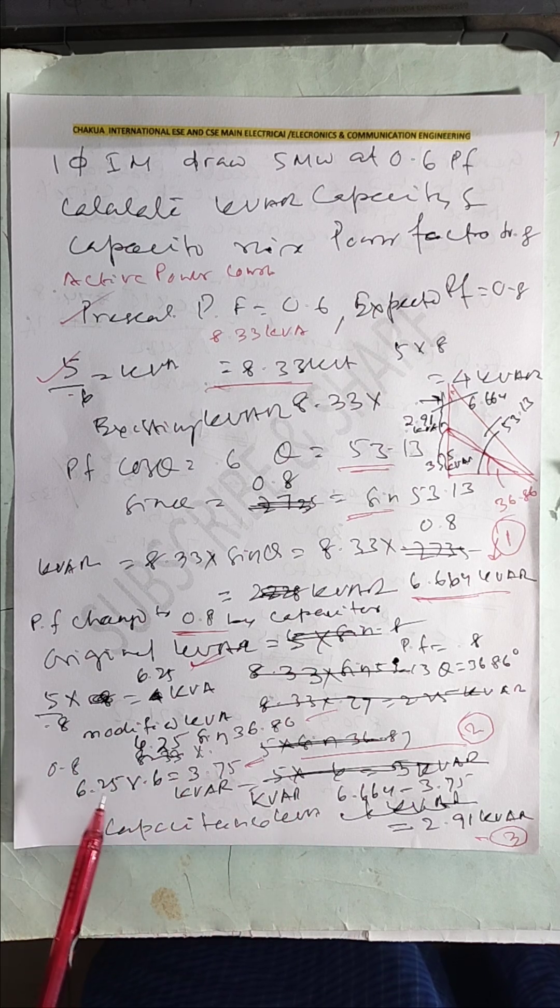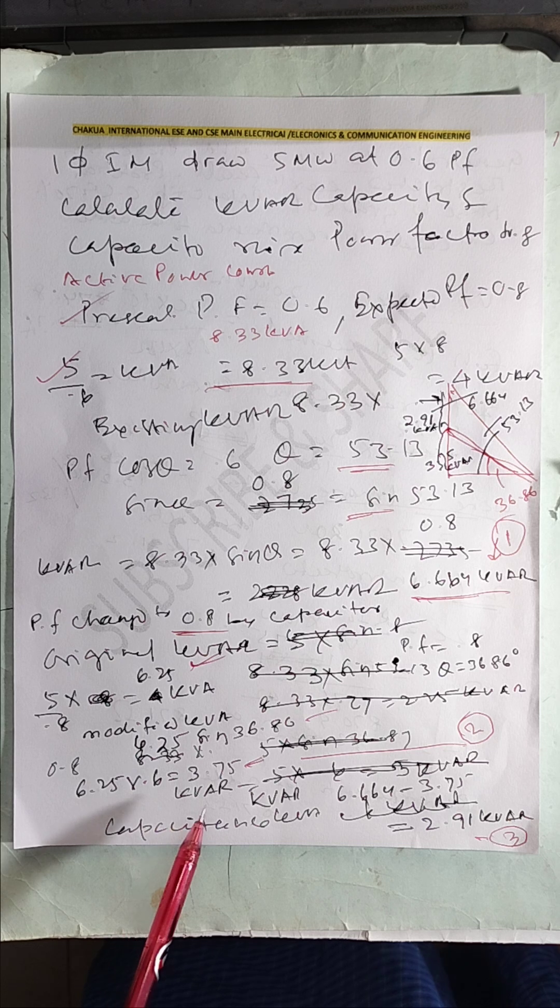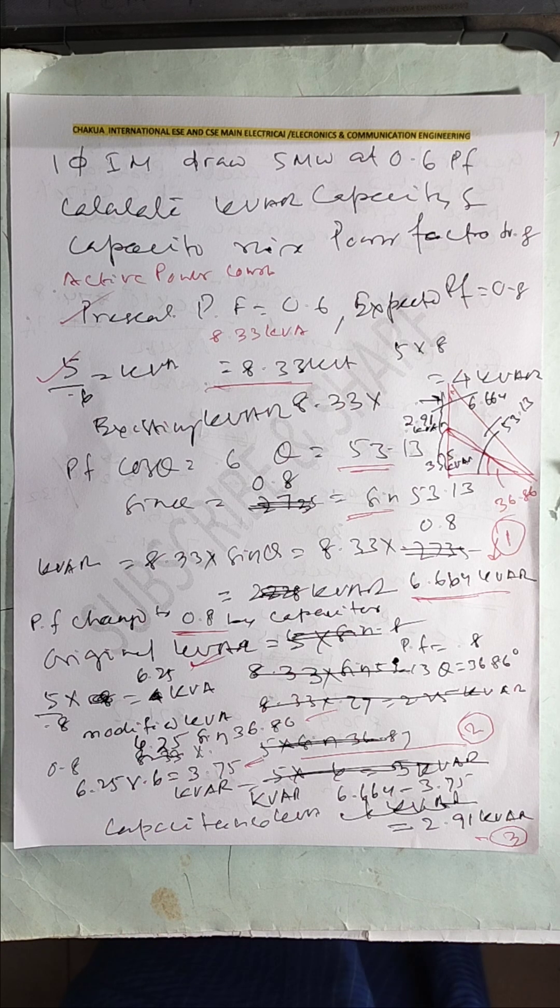So the new kVAR is 3.75. How does it happen? Due to the addition of a capacitor. What is the capacitor value?